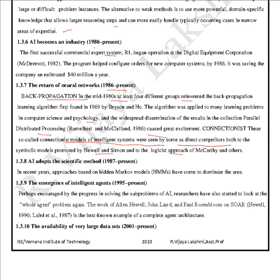AI adopts the scientific method in recent years — all approaches are based on hidden Markov models, which came to dominate the area. The emergence of intelligent agents from 1995 to present: increased by progress in solving sub-problems of AI, researchers started looking at the whole agent problem again. The work of Alan Newell, John Laird, and Paul Rosenbloom in 1990 is the best example of a complete agent architecture.